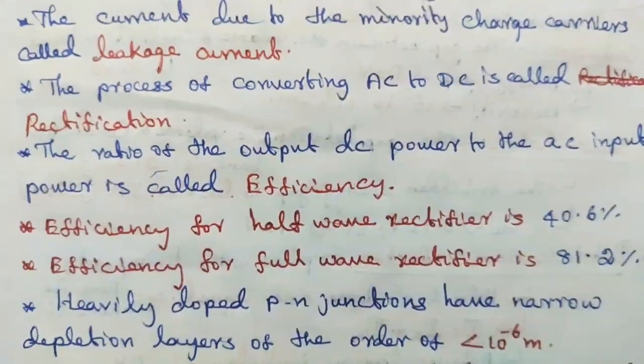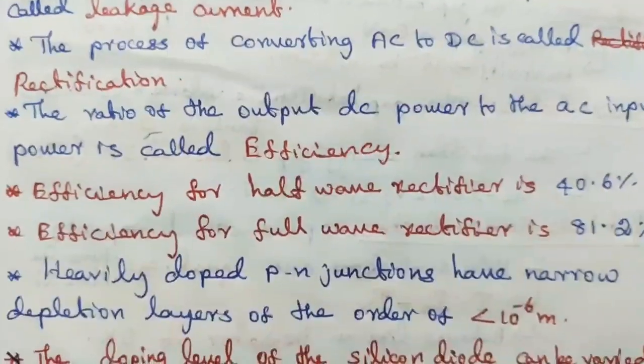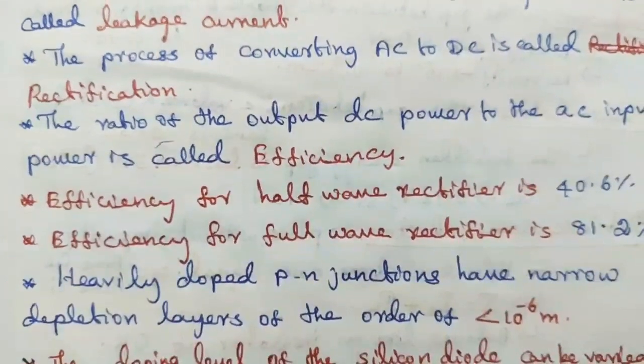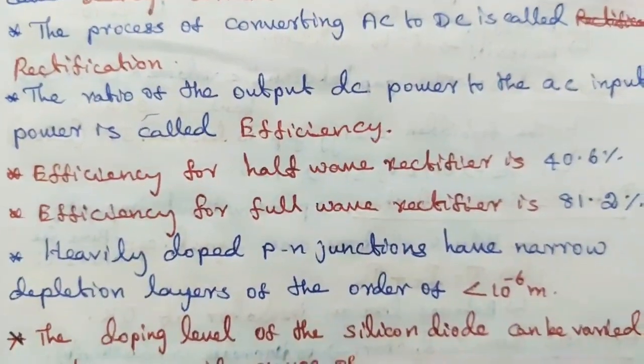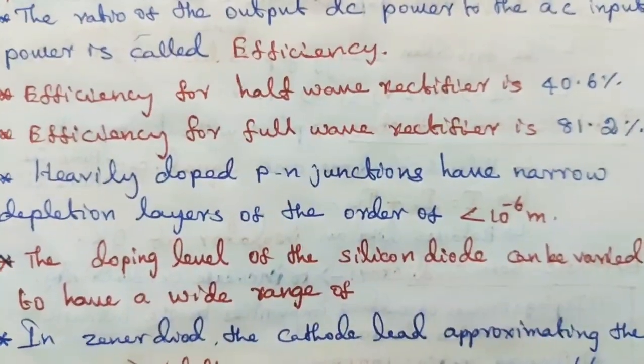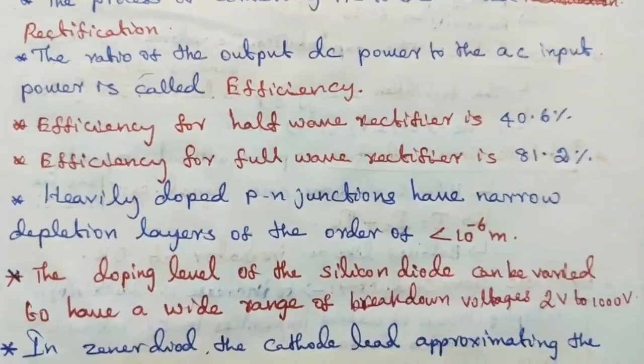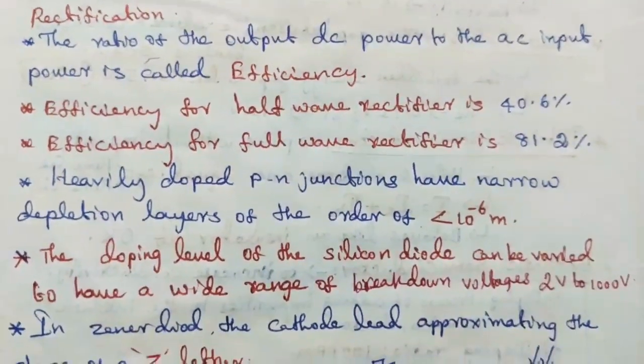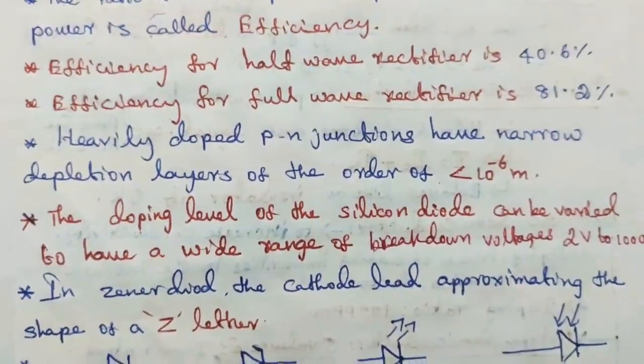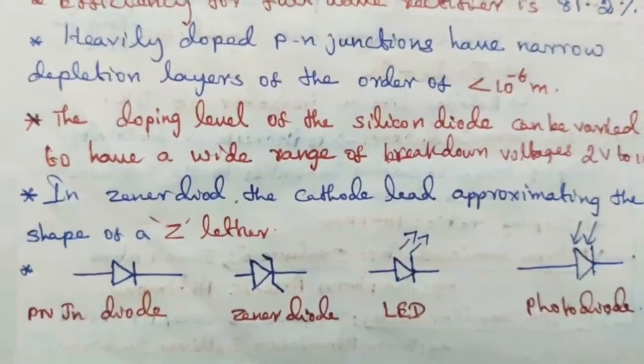Heavily doped p-n junctions have narrow depletion layers of the order of less than 10 power minus 6 meter. This type of breakdown is called Zener breakdown. The doping level of the silicon diode can be varied to have a wide range of breakdown voltages, 2 volt to 1000 volt. In Zener diode, the cathode lead approximates the shape of Z letter.